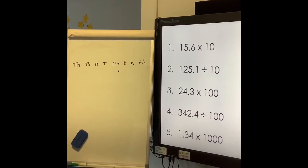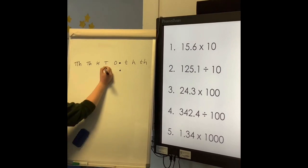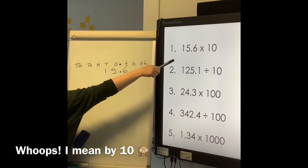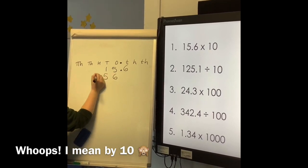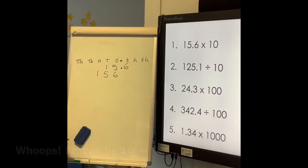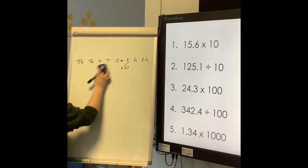So hopefully you've all had a go. Number 1: 15.6. We're timesing by 10, which means we move each digit up one place value grid, so the answer you should have got is 156. Well done if you did.